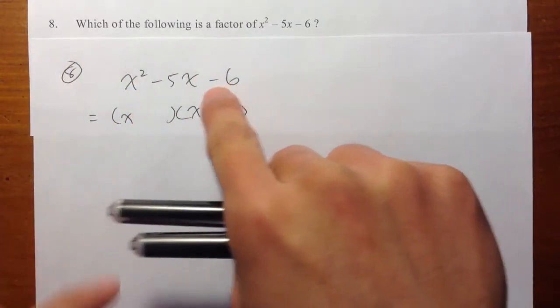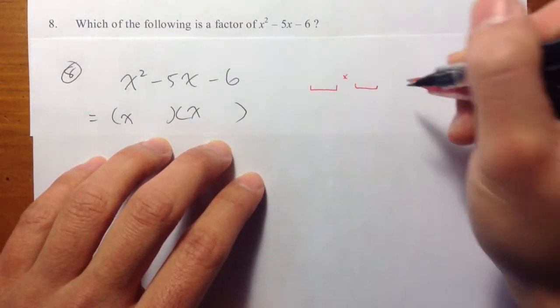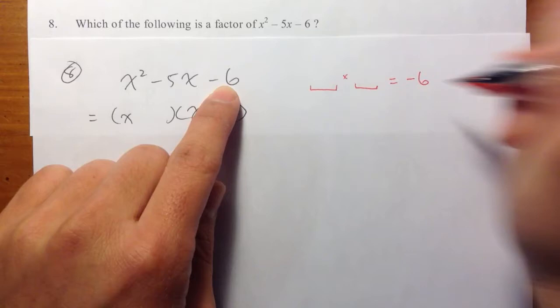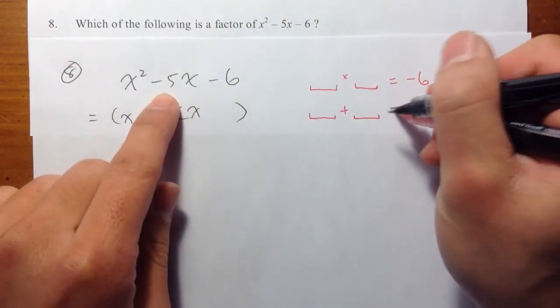Let me look at negative 6 and then think about two numbers. When you multiply these two numbers, they become negative 6, and then when you add up these two numbers, they become negative 5.